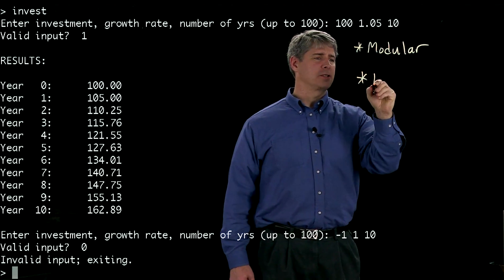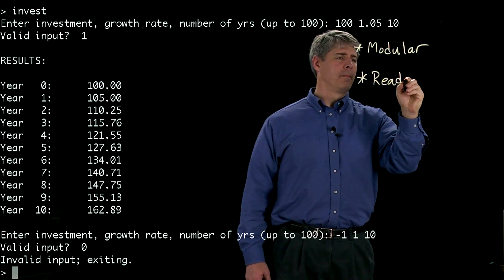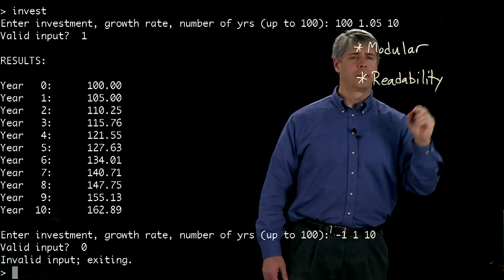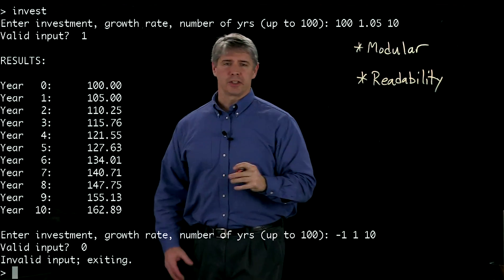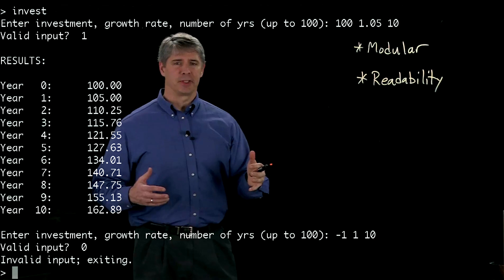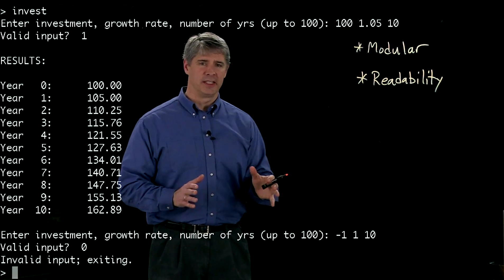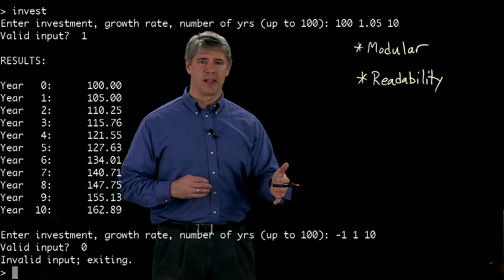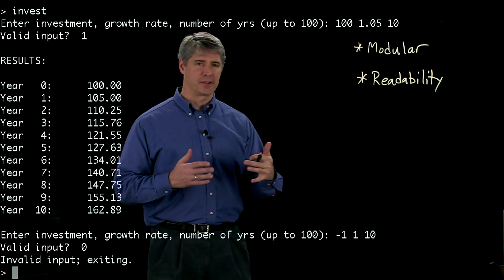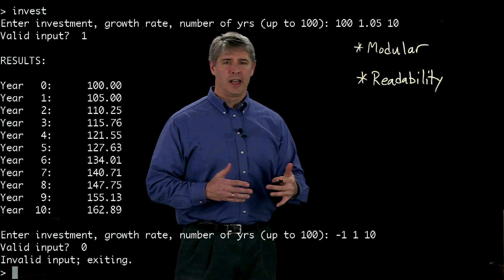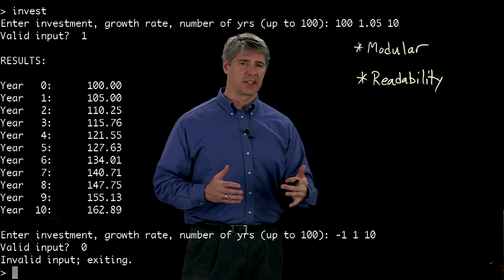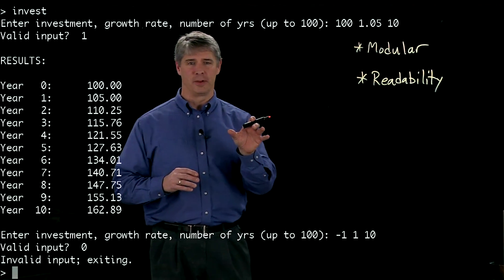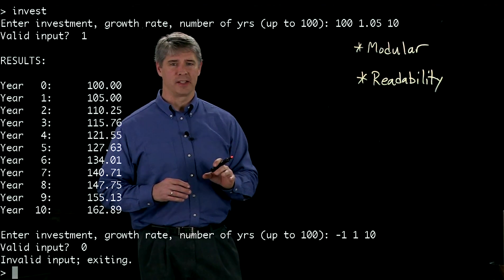The second aspect is readability. You should use white spaces and carriage returns to help organize your code in an easily readable way. You should use comments so that readers of your code can understand what you're trying to do. And you should give variable names and function names that mean something, so when I look at that variable, I can guess what it's trying to do.